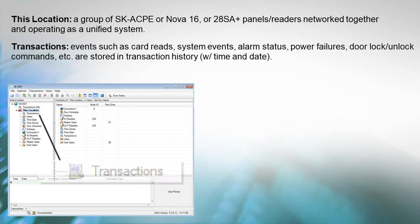Transactions are the various events in the system such as card reads, system events, alarm status, power failures, door lock and unlock commands, etc., which are stored in transaction history including the time and date for each event.